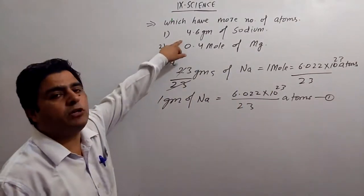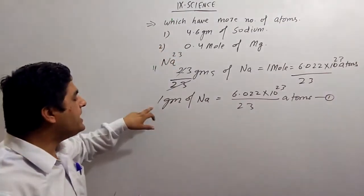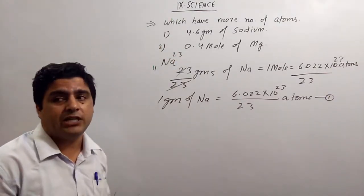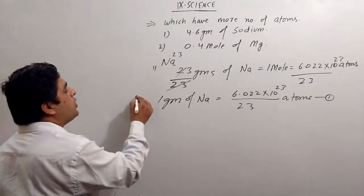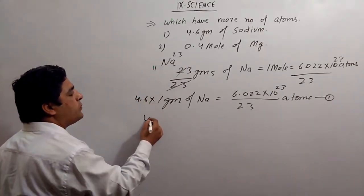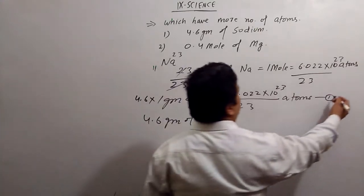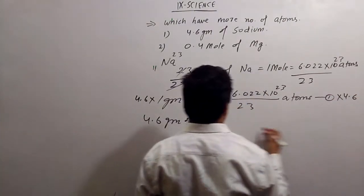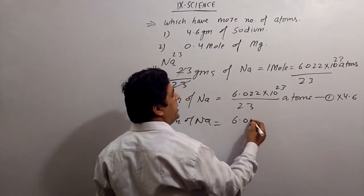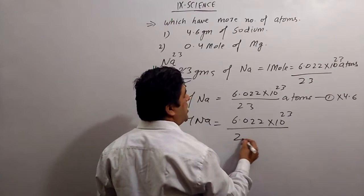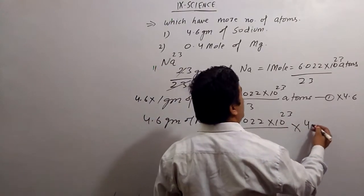Now it is asking about 4.6 grams. 4.6 ones are 4.6 grams. Multiplying by 4.6, it becomes 6.022 × 10^23 divided by 23 times 4.6 atoms.